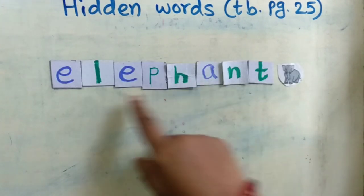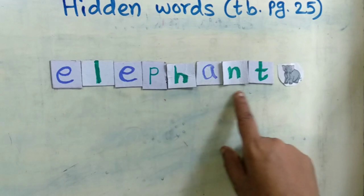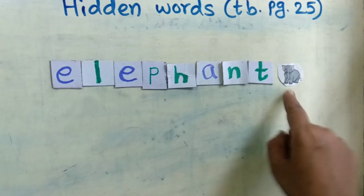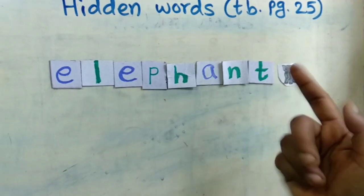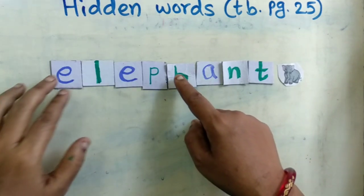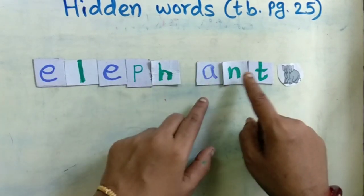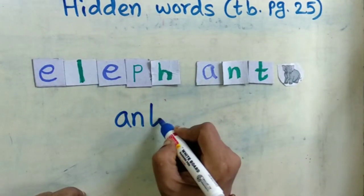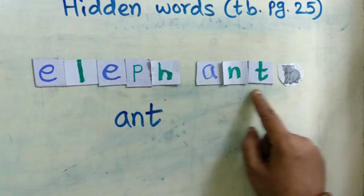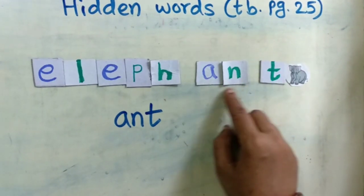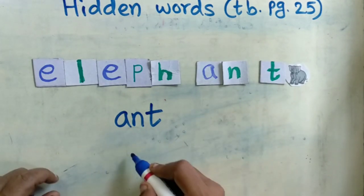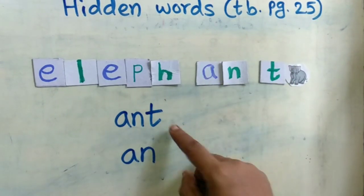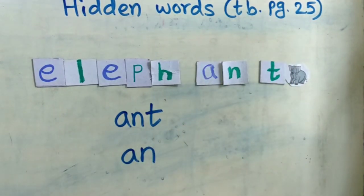Now this is another word: E-L-E-P-H-A-N-T, elephant. Elephant is a big strong animal. Now if you see the spelling, which words are hidden in this? I break this word here, then I got the word A-N-T, ant. Ant is the name of a small insect. And in ant again if I break, I got the word A-N, an — we say 'an apple', 'an ice cream cup'. So in the word elephant I got two words: A-N-T, ant, and A-N, an. Thank you.